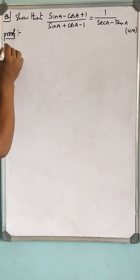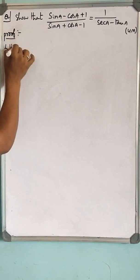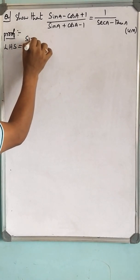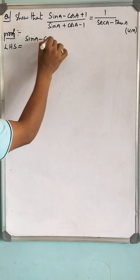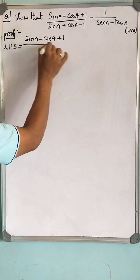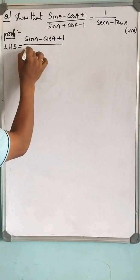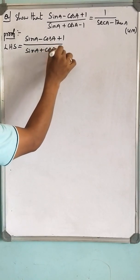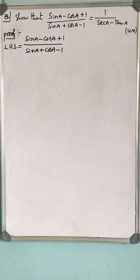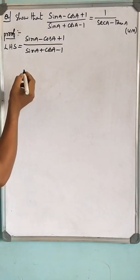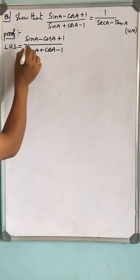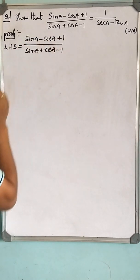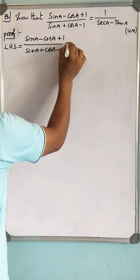Let us take LHS: (sin a - cos a + 1) / (sin a + cos a - 1). Let us divide each term in the numerator and denominator by cos a. What happens? Let us see.